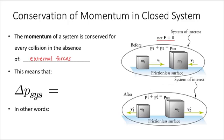Friction is not present in this case because friction would be an external force. So when we assume that momentum is conserved, we're ignoring the effects of friction. We are not accounting, though, for any internal force of collision, because that is an internal force and we don't need to consider that.